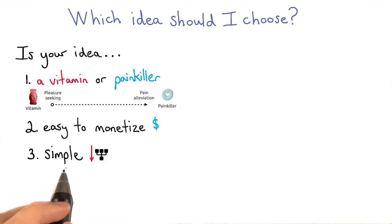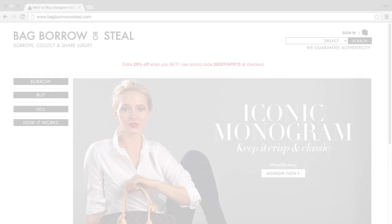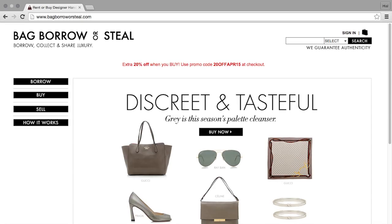Next, is the idea simple? Can you explain your idea in just a couple sentences? For example, bagborrowsteal.com is like Netflix, but instead of renting movies, you can rent, buy, or sell designer items.